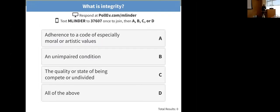So here's our first question, and it's a multiple choice. You can respond either by logging into this URL or you can text that number and then you join MLinder. The question is, what is integrity? And there are four choices here. And if things work well, I'll see that you're starting to respond down here.